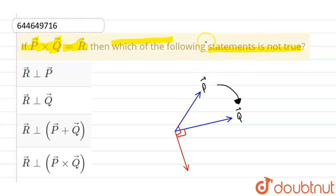Now we have to select the false statement which is not true from the given options. First option is that R-vector is perpendicular to P-vector. This one is R-vector. R-vector is obviously perpendicular to P-vector. So this is a true statement, but we need a not true statement.